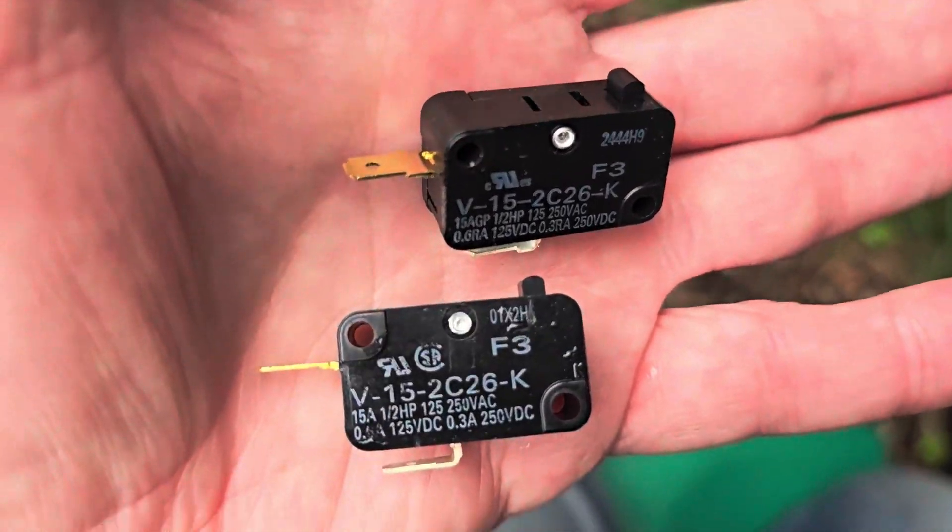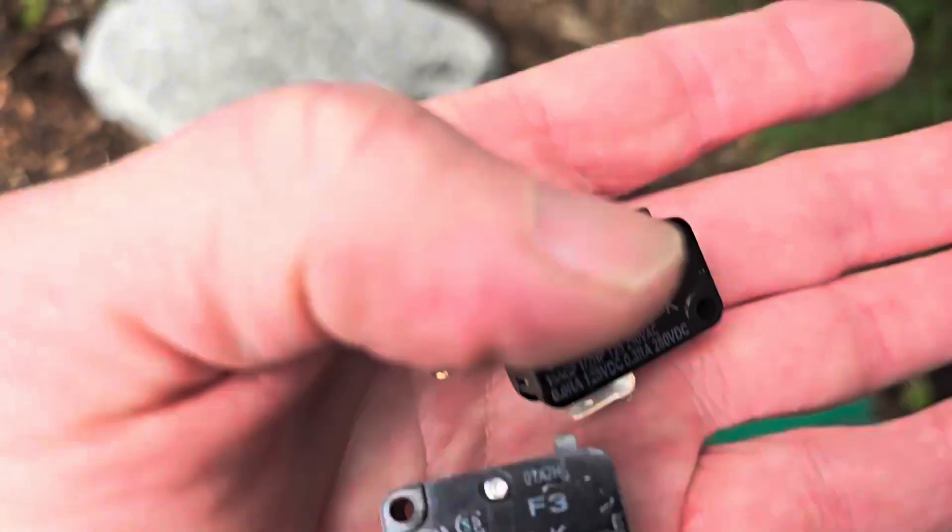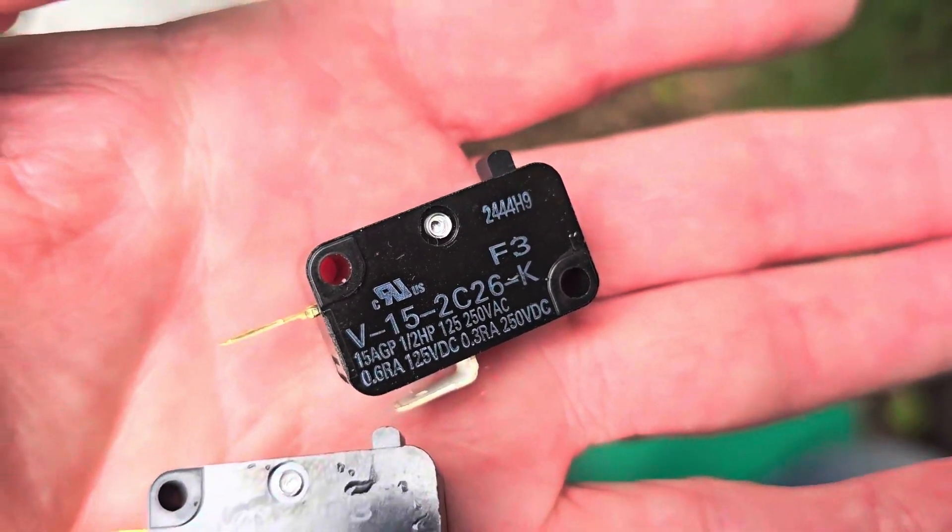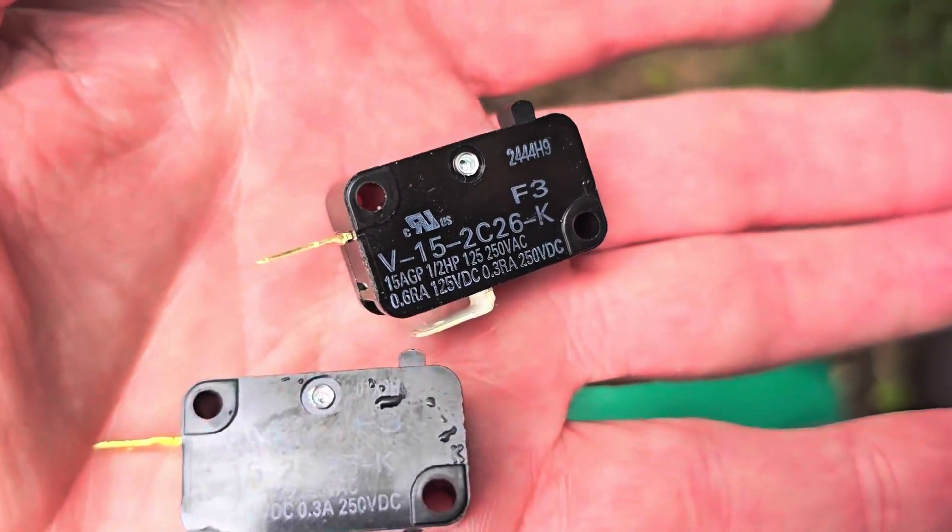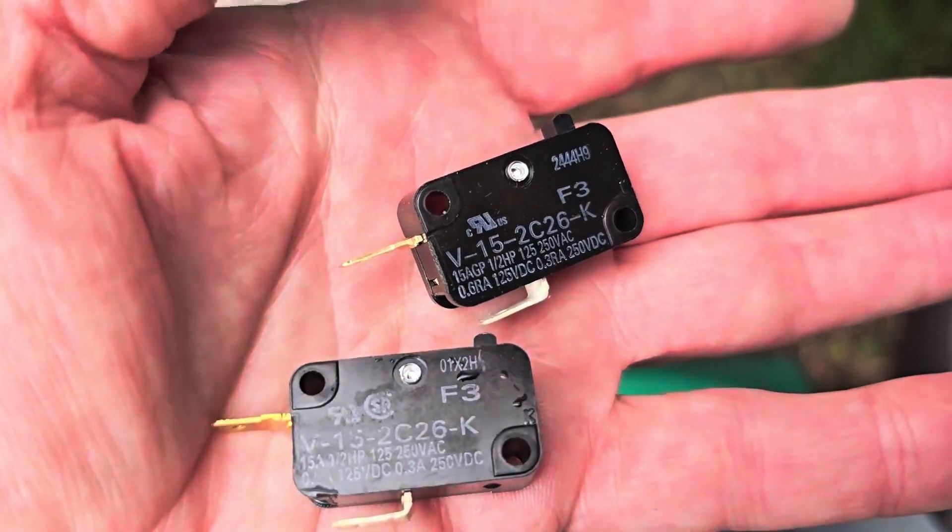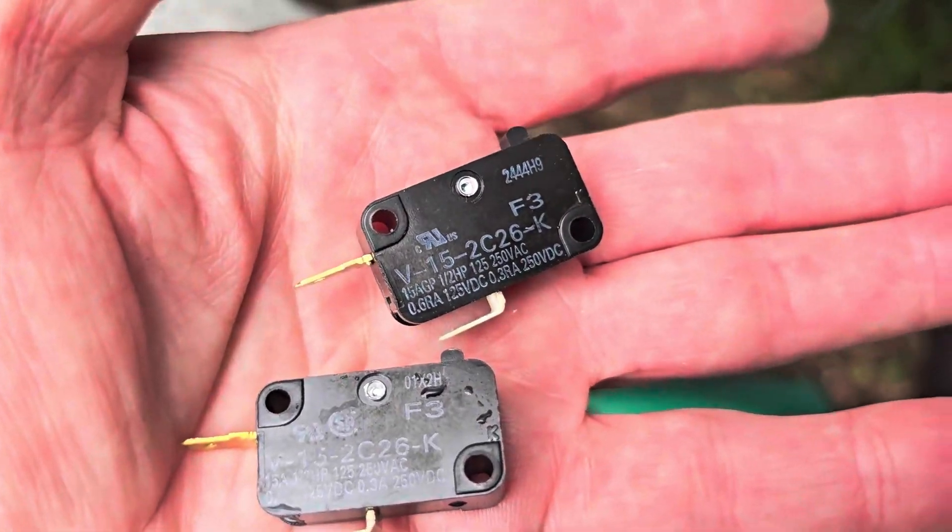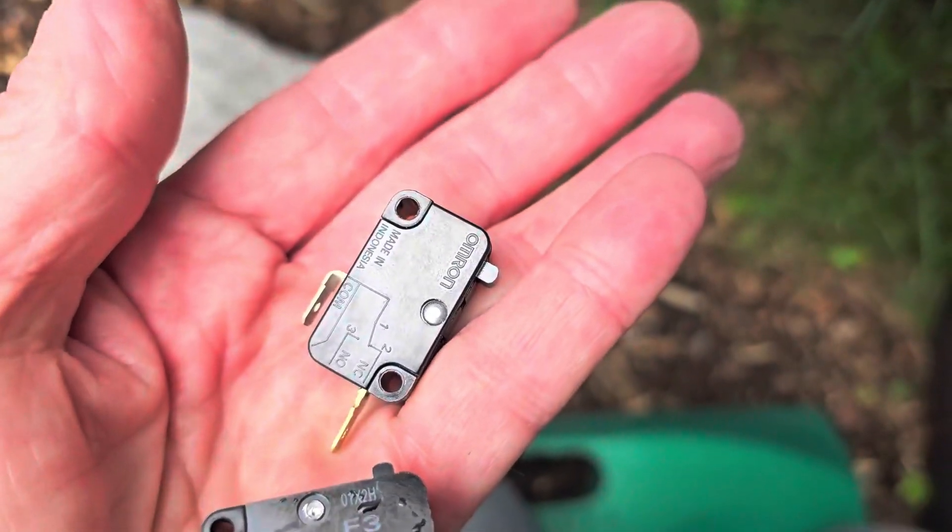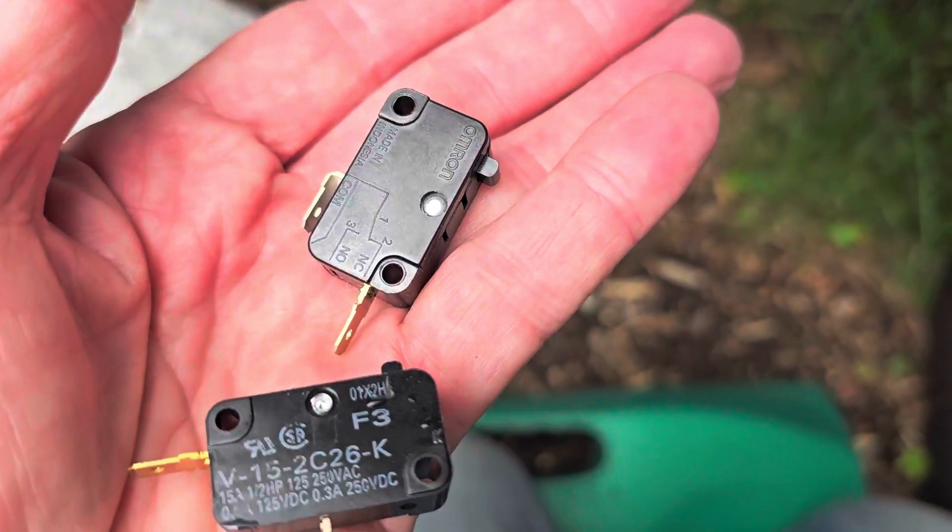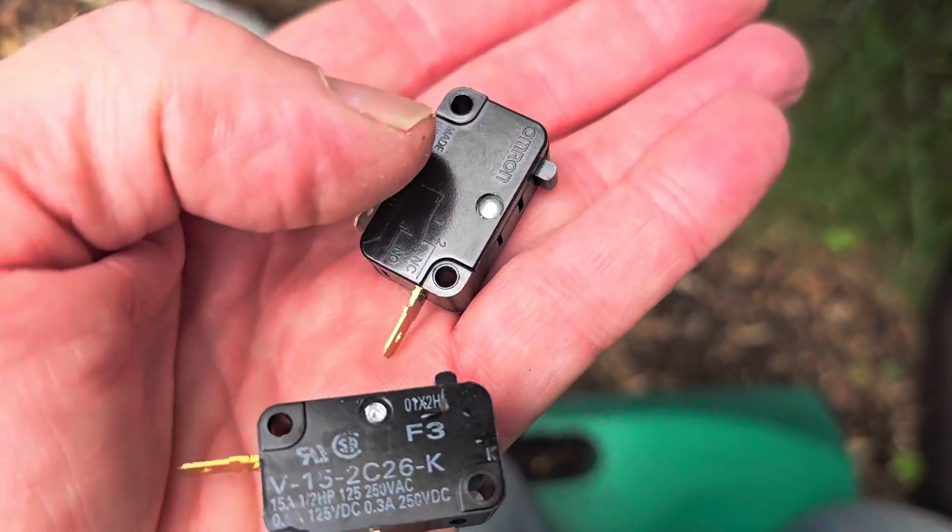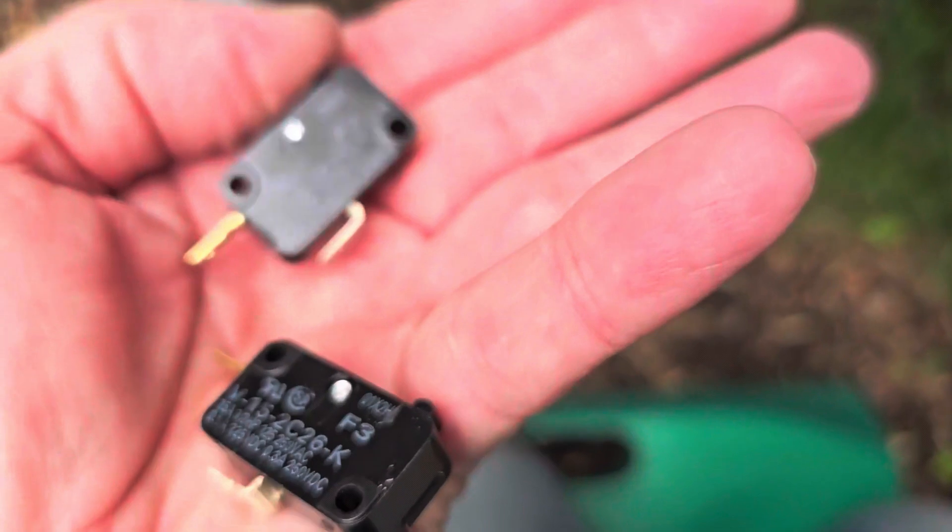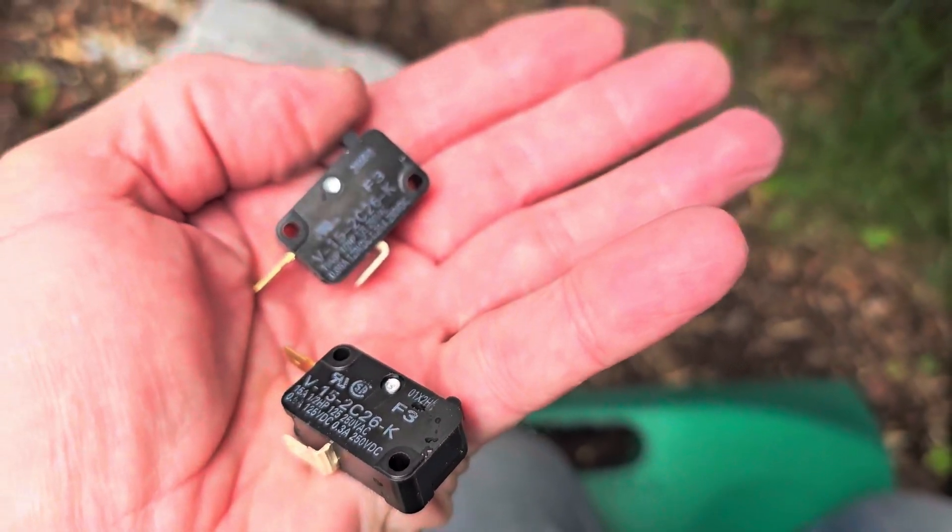Here are the two switches: one on the bottom I just took out and the one on top here I got off Amazon. It was two of them for $9.99 next day delivery. The listing didn't say it was an Omron but it does have that on the case. I suppose it's always possible it's a counterfeit, but it looks pretty much the same so I'm going to pop that in and give it a try.